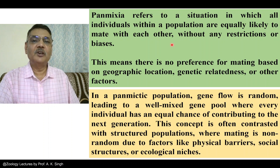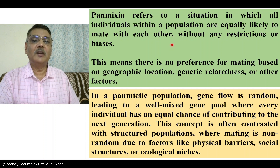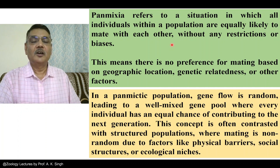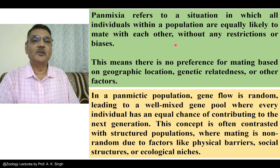We should know that if a population is very large, then there would definitely be a higher chance of random mating. But generally, several populations remain in constricted or small form, and that is why inbreeding or breeding between close relatives may take place. Small populations with fewer individuals have a higher chance of inbreeding, and random mating will not be possible in such cases.